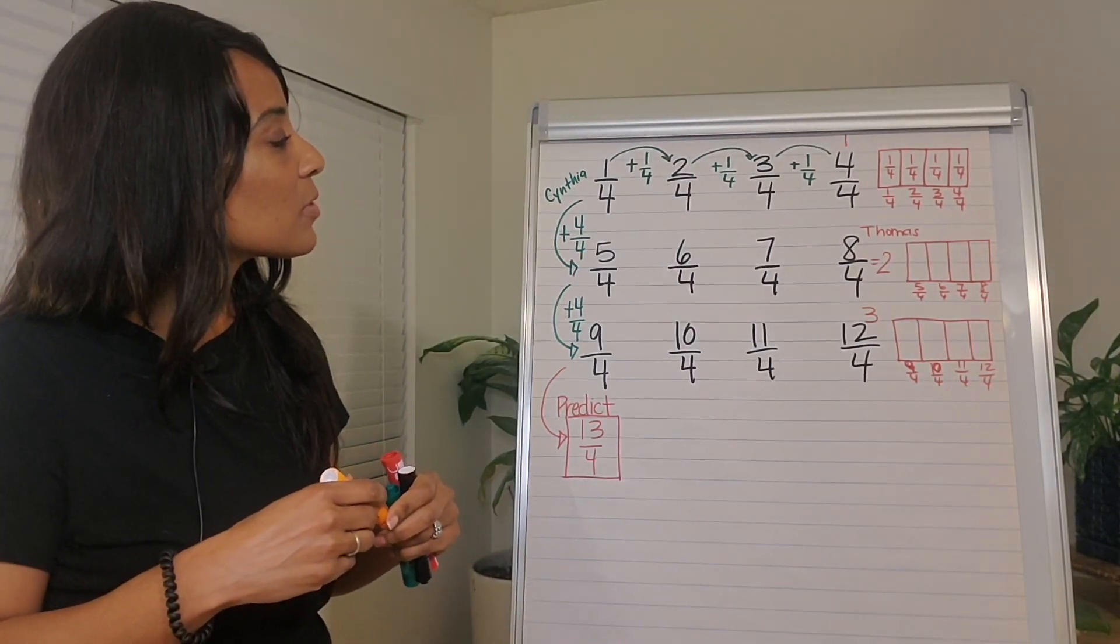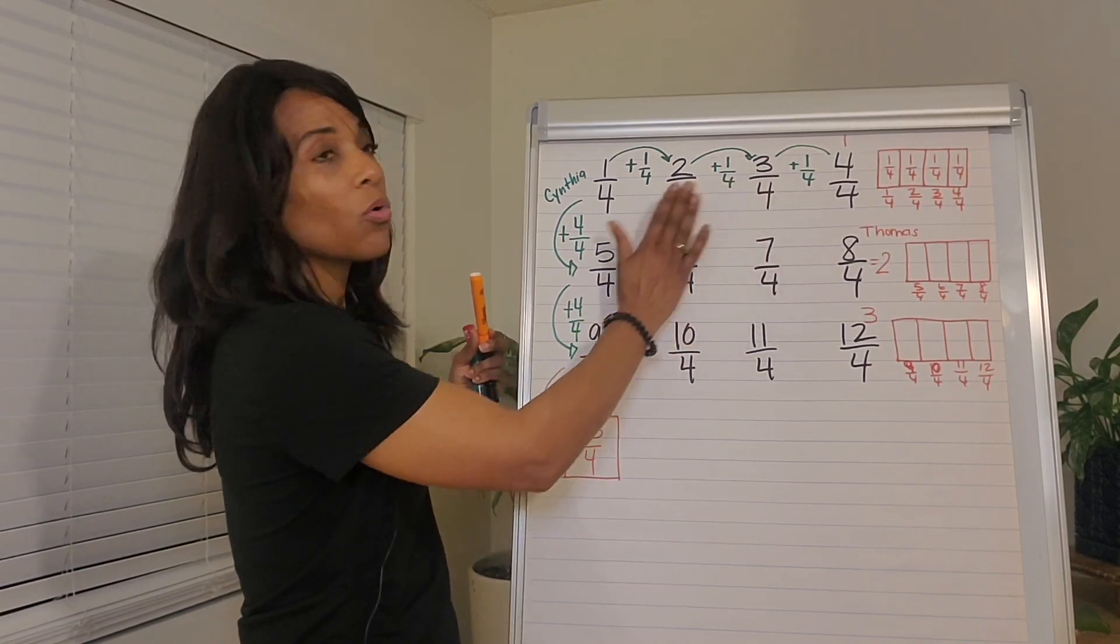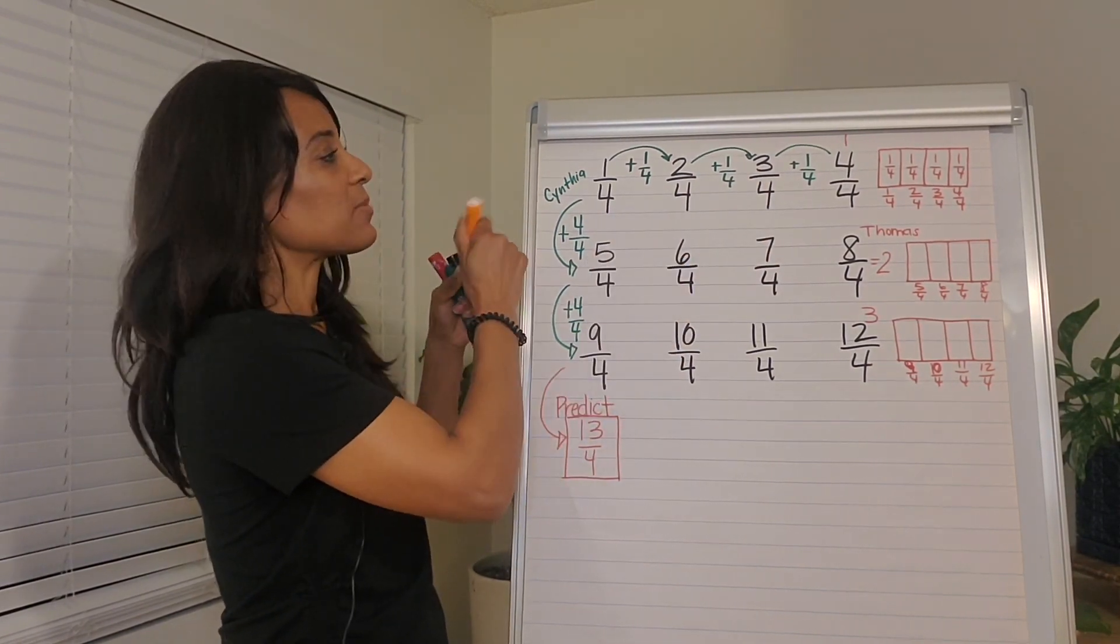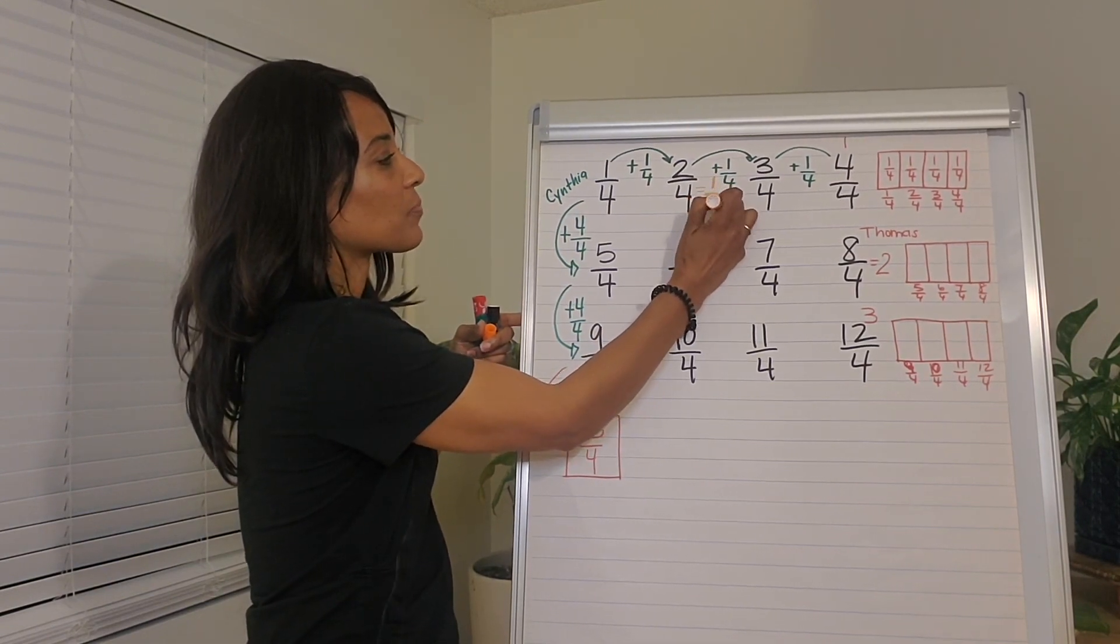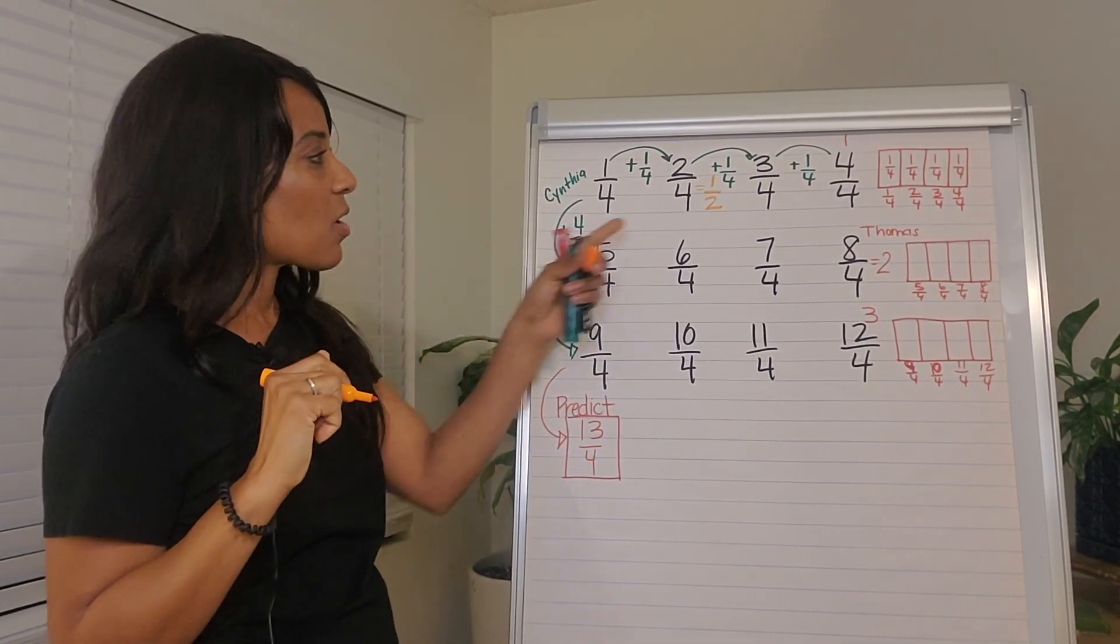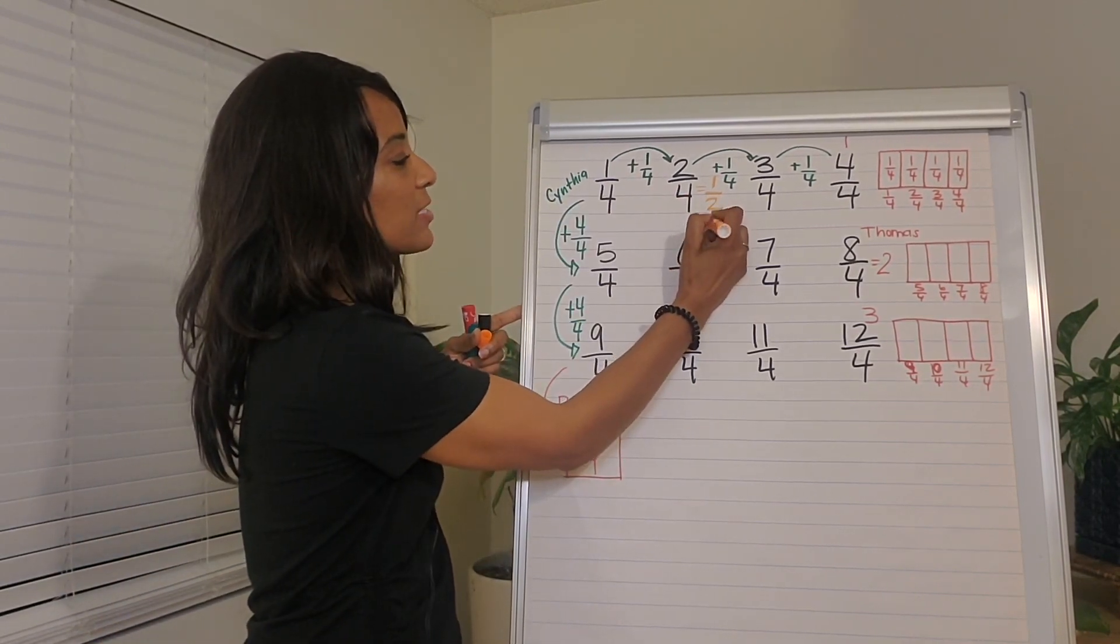All right. So some kids will say, well, four fourths is one whole. So two fourths must be one half. And so I'll write that there. And if Chris recognized it, I'll write Chris's name below.